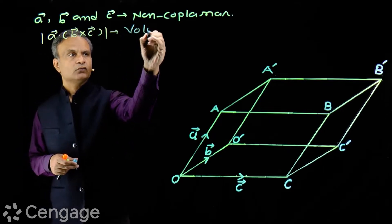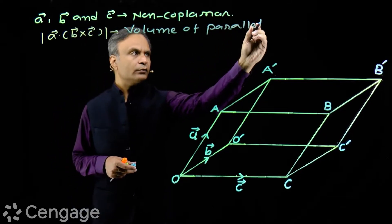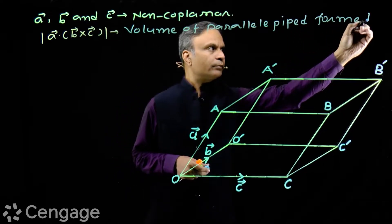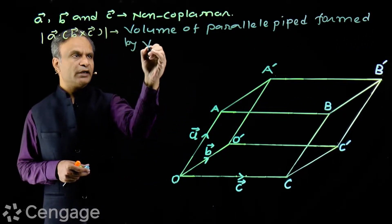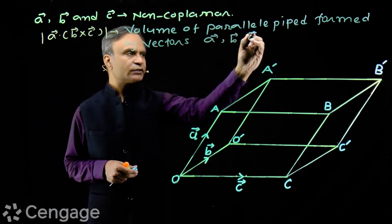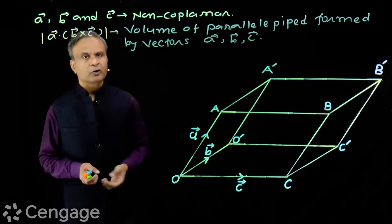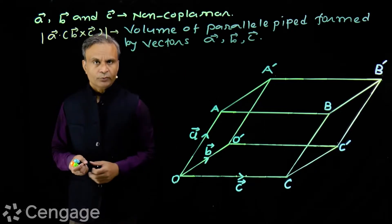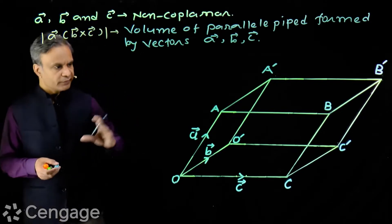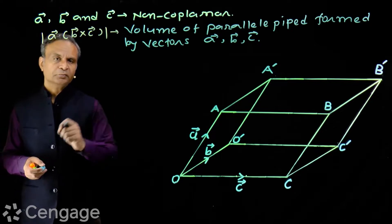This is the volume of the parallelepiped formed by vectors A, B, and C. Since the parallelepiped is formed, vectors A, B, and C must be non-coplanar. Now we will prove that the volume of the parallelepiped formed by vectors A, B, and C equals the modulus of the scalar triple product A dot (B cross C).